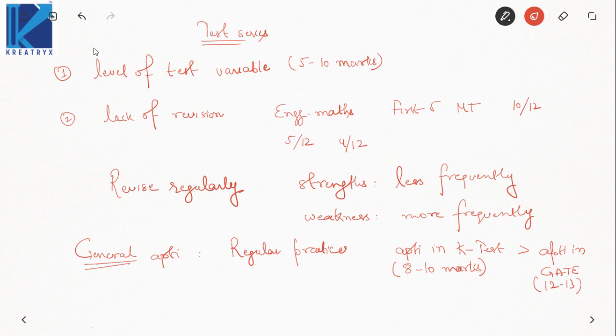If you are doing well in those 15 marks, then only can you expect a good rank in GATE. If you lose those 15 marks, technical performance alone will not help you as much. Don't be lenient in aptitude — if your capability deserves an under-10 rank, you will not achieve it if your aptitude is not good. General aptitude can only be improved by regular practice. Even in the last 10 days, dedicate one hour daily to practicing general aptitude problems, and in the last days focus on aptitude problems from previous years — don't go after books or test series, practice previous year problems; that will be sufficient.